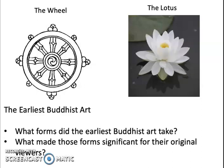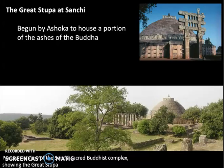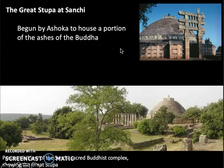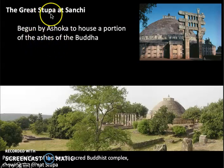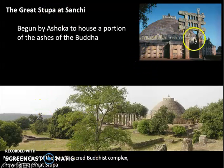Studying early Buddhist art and the forms it took, one of our most important surviving examples is the Great Stupa at Sanchi, which was begun by Ashoka to house a portion of the ashes of the Buddha. In a society where cremation is the practice after death, we're going to talk about how those ashes get put in a stupa. Sanchi is the place where this stupa is sited, surrounded by the landscape.